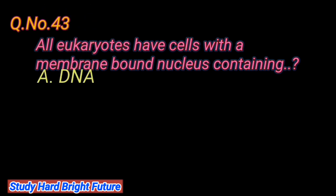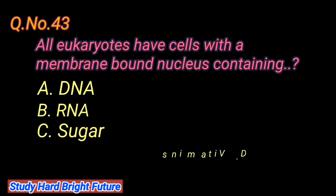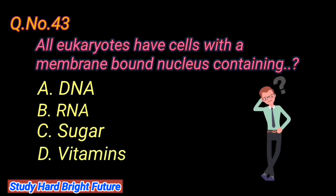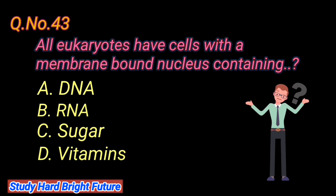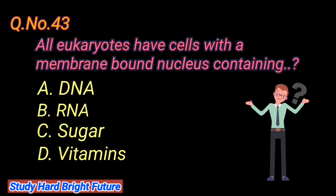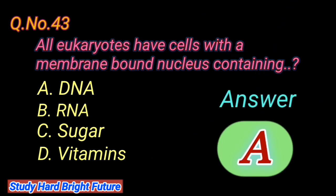Question number 43: All eukaryotes have cells with membrane-bound nucleus containing. A. DNA, B. RNA, C. Sugar, D. Vitamins. The right answer is A. DNA.